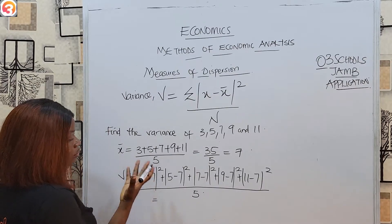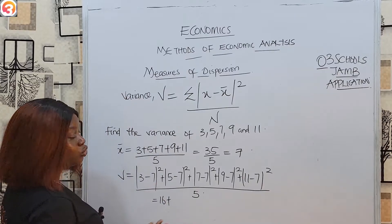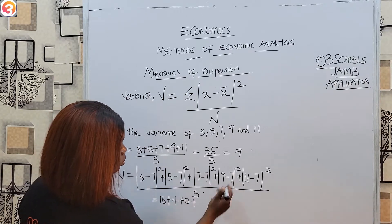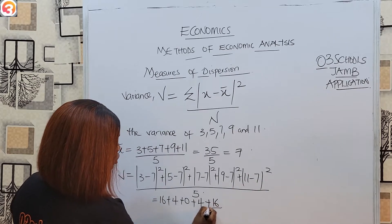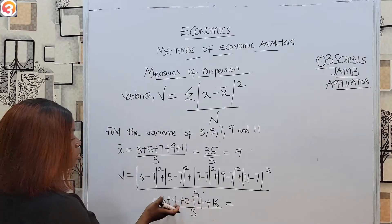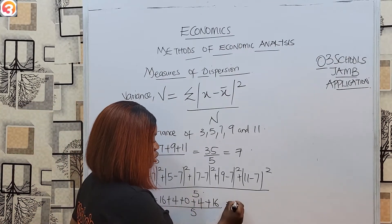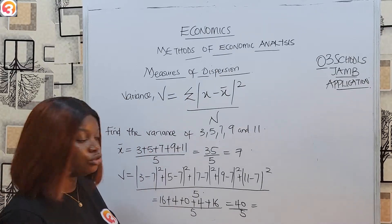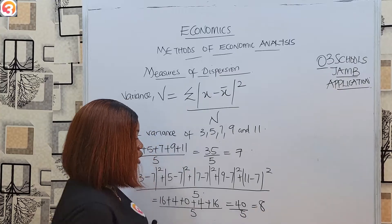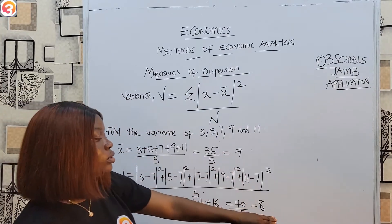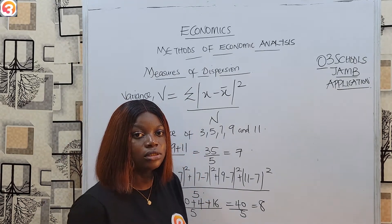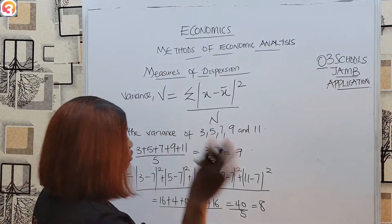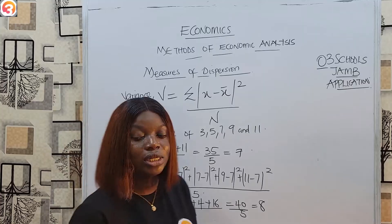Now variance V equals summation (x minus x̄)² over n. So we have (3−7)² + (5−7)² + (7−7)² + (9−7)² + (11−7)², all over 5. That gives us 16 plus 4 plus 0 plus 4 plus 16, which is 40 over 5. The variance V equals 8, which is the squared average distance between the set of data and the mean.